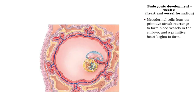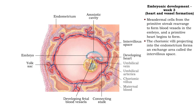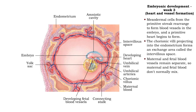Also during the third week, mesodermal cells from the primitive streak rearrange to form blood vessels in the embryo, and a primitive heart tube is formed. Continued development of the chorion results in the formation of the chorionic villi, projecting into the endometrium to form an exchange area called the intervillus space. The maternal blood vessels and fetal blood vessels remain separate, so maternal and fetal blood do not normally mix.